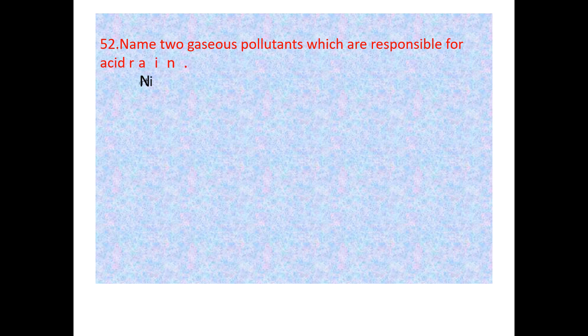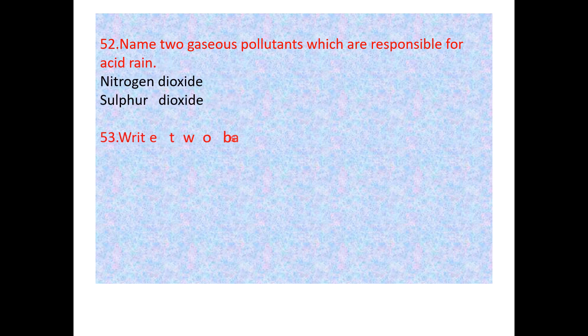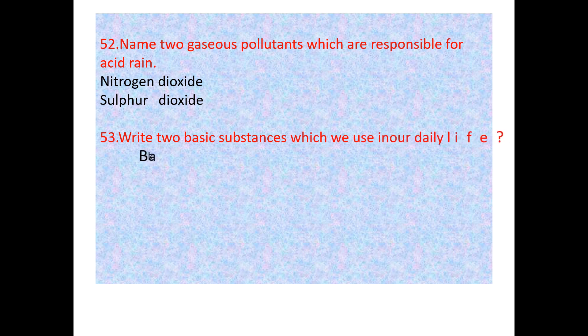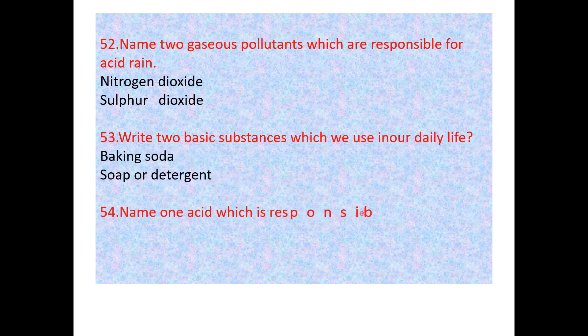Name two gaseous pollutants responsible for acid rain — nitrogen dioxide and sulfur dioxide. Write two basic substances used in daily life — baking soda and soap or detergent. Name one acid responsible for acid rain — carbonic acid.